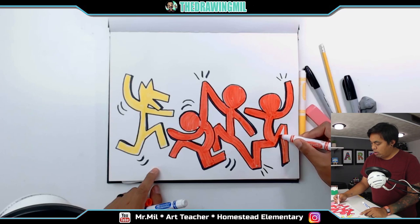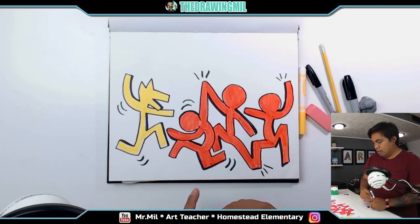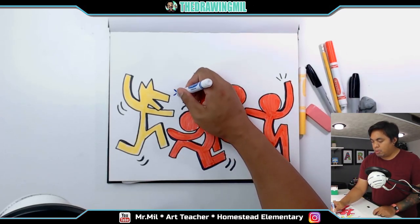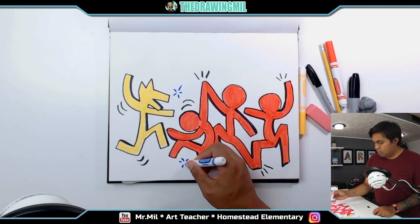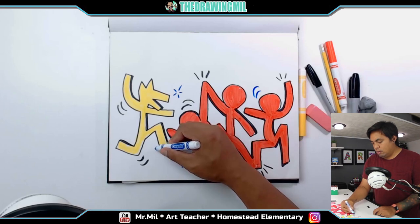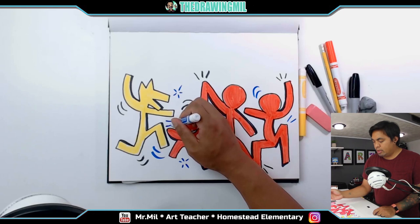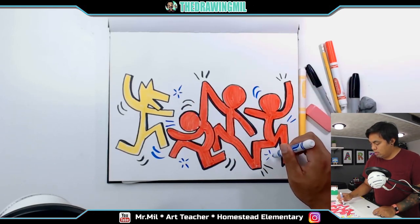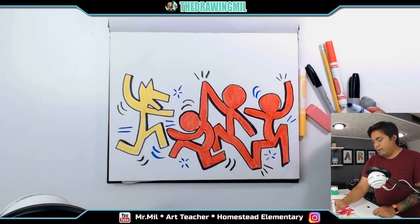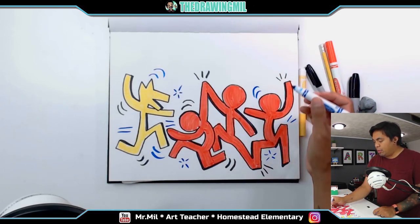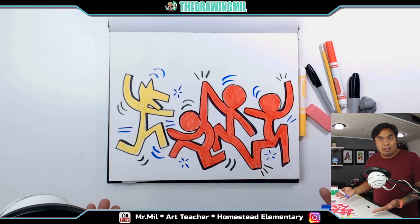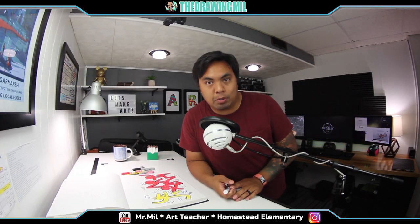With the blue, I'm going to do some more movement lines — sparks and radiating lines like that. I think I'm going to call this done. This is a more advanced version of the Keith Haring project we normally do in second grade. I hope you guys enjoy it — see you in the next video, bye bye!